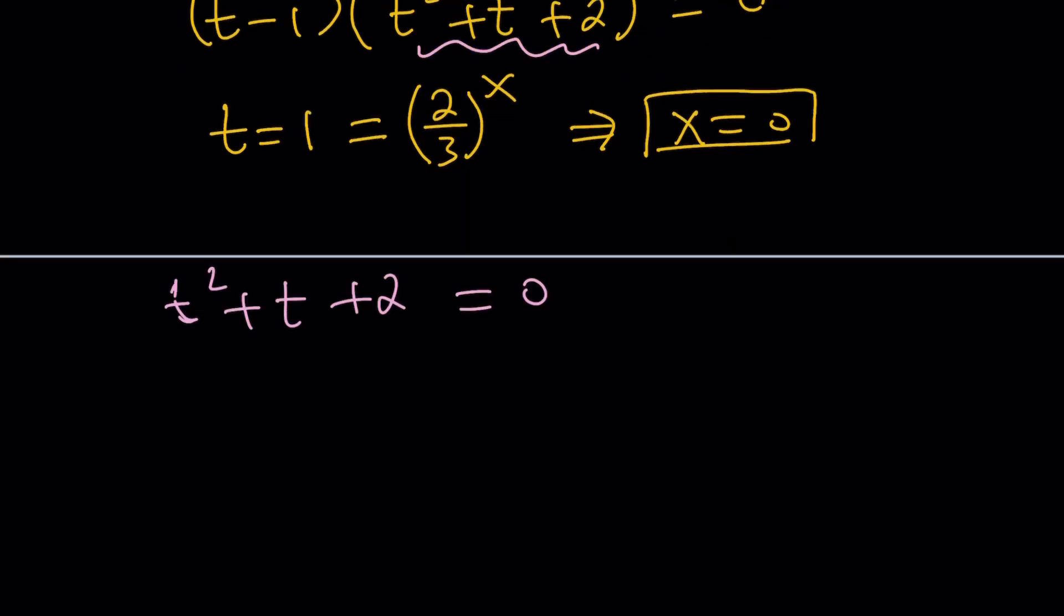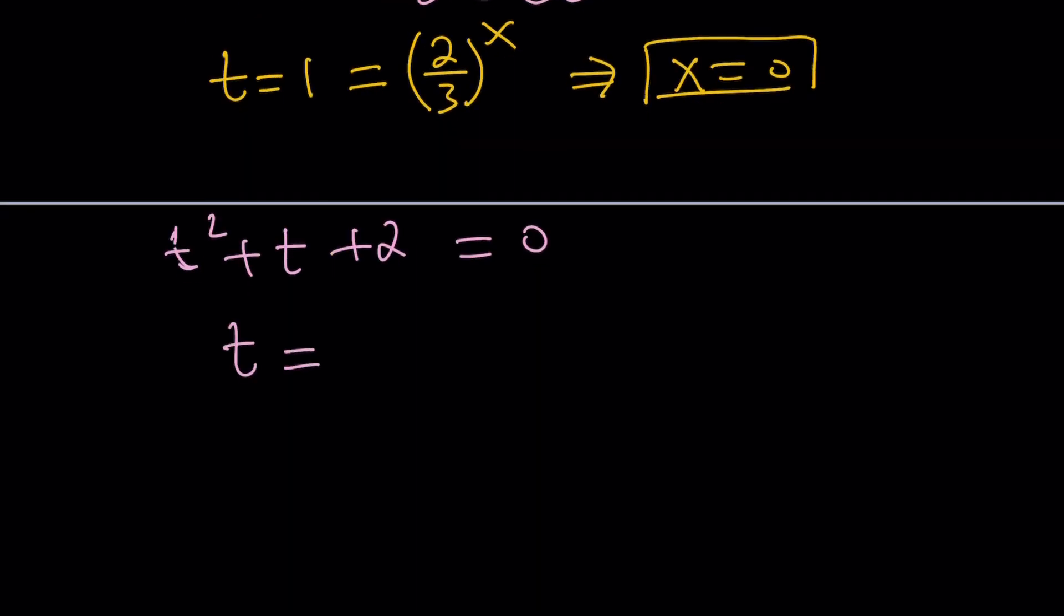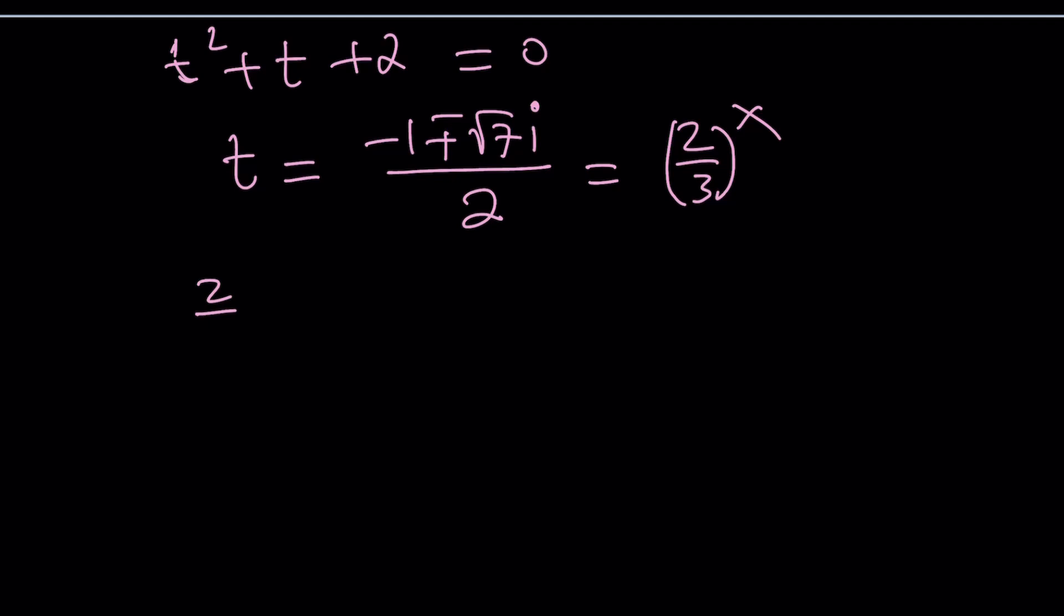It's not factorable, obviously. You can solve it by using the quadratic formula, negative b plus minus the square root of b squared minus 4ac, so on and so forth. And you're going to get the following. When you set it equal to two-thirds to the power of x, you kind of run into a problem because this is a complex number, non-real complex number. So the solutions are going to be coming from some complex logarithms. So you're going to have to kind of write it this way.